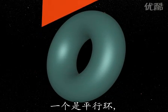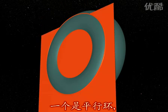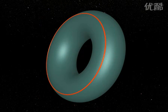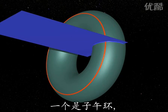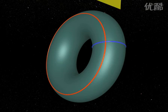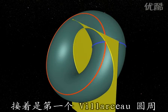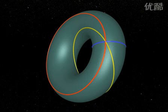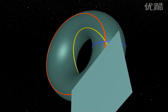One of these circles is a parallel. Another is a meridian. Then a first Villarceau circle, and a second one.